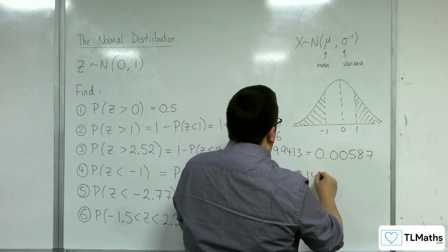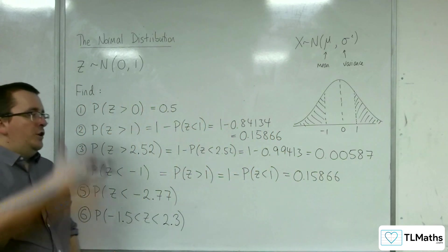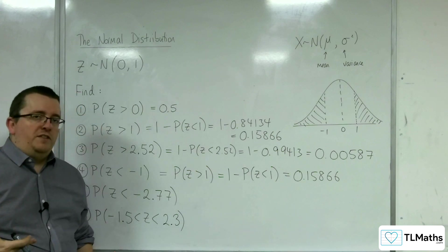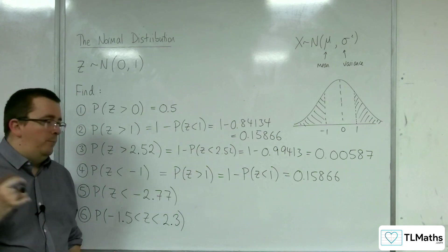So that is 1 take away the probability of Z being less than 1, which we worked out here. So 0.15866. So you've got to use the symmetry of the diagram in order to visualize this. That's why a diagram is so important for these.